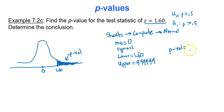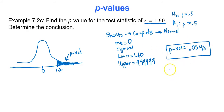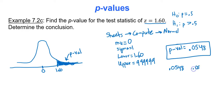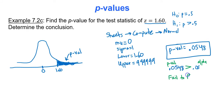We get 0.0548. Comparing that to alpha of 0.05: is the p-value less than or greater than alpha? It's greater than. So since we are not less than alpha, we fail to reject the null hypothesis.